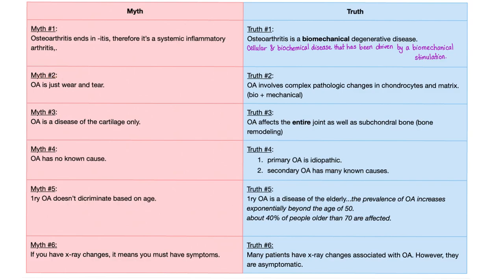Myth number two: osteoarthritis is just wear and tear. The truth is, osteoarthritis involves complex pathological changes in chondrocytes and their matrix and the bone — cartilage and bone — and it's a complex pathological process: bio plus mechanical, not only mechanical.